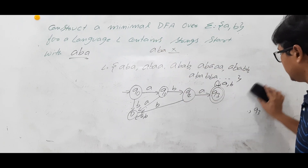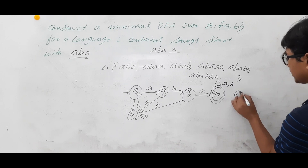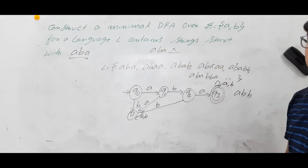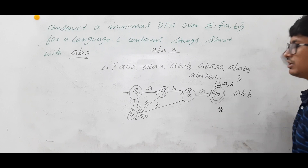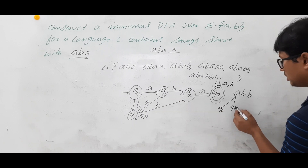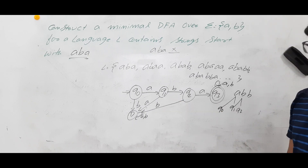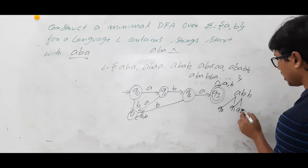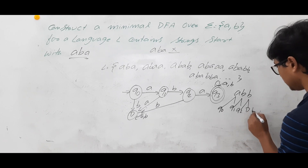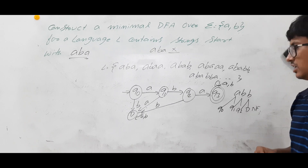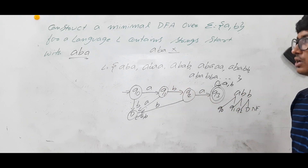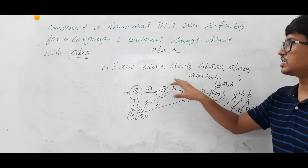Now let's check a string that does not belong to language L: ABB. ABB does not start with ABA, so it does not belong to language L. Starting from Q0: Q0 on A goes to Q1; Q1 on B goes to Q2; Q2 on B goes to dead state D. D is a non-final state, so ABB is not accepted. The DFA correctly rejects strings not in language L.